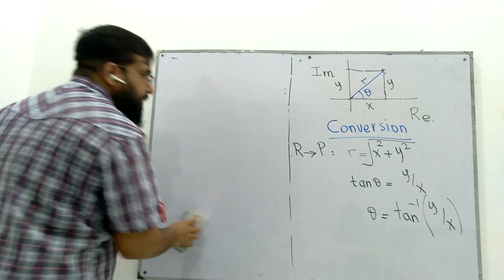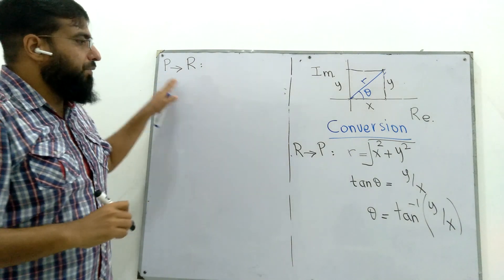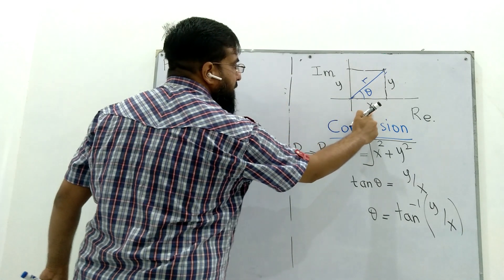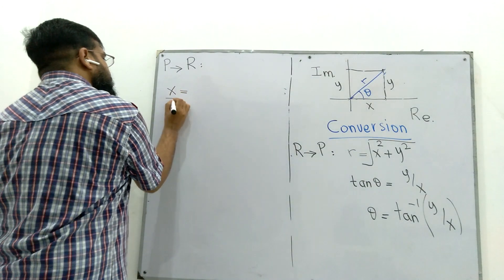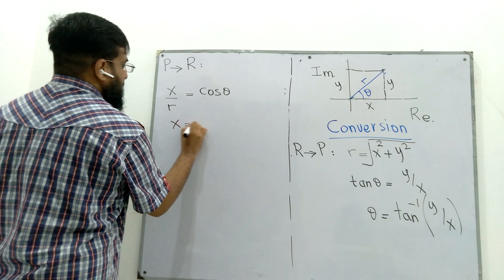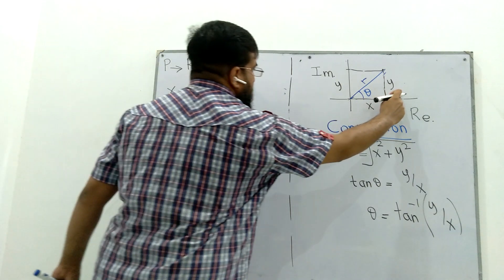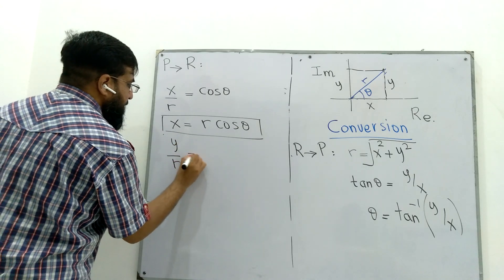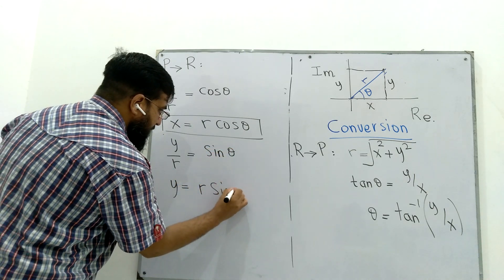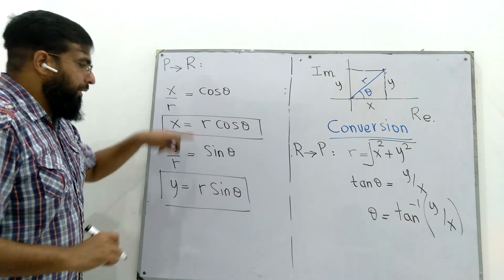We can go the other way around. From polar number, we can go to rectangular. In this case, we are given r and theta to find x and y. X is the base of this triangle. What is x over r? This is base over hypotenuse, which is cos of theta. Or x equals r cos theta. What is the ratio between the perpendicular, which is y over r? This is sin of theta. Or y is r times sin of theta. This is how we can go to a rectangular representation given r and theta, the polar parameters.